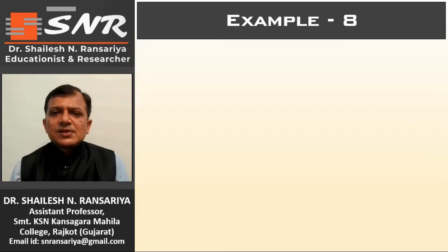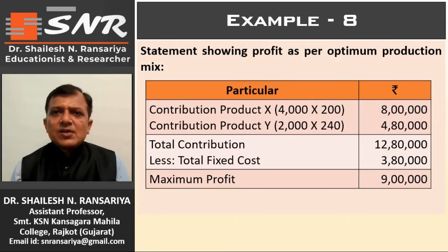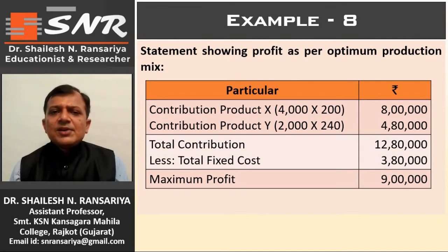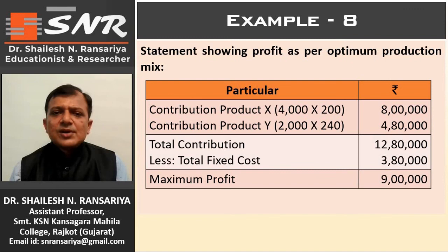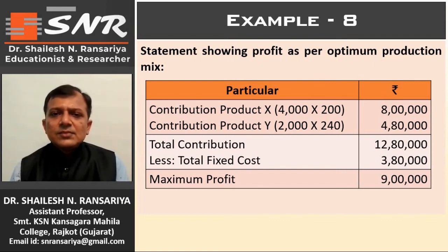Statement showing profit as per optimum production mix. Contribution from Product X: 4,000 units multiplied by rupees 200 per unit = rupees 8 lakhs. Plus contribution from Product Y: 2,000 units multiplied by rupees 240 per unit = rupees 4 lakhs 80 thousand. Total contribution: rupees 12 lakhs 80 thousand. Less total fixed overhead as given: rupees 3 lakhs 80 thousand. Maximum profit: rupees 9 lakhs.